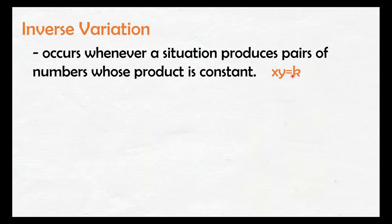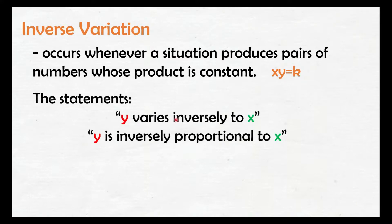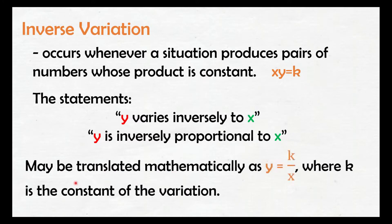In direct variation, we divided the two variables to get the constant. But here in inverse variation, we multiply the two variables, then we get the constant. The statement 'y varies inversely to x' and 'y is inversely proportional to x' may be translated mathematically as y equals k over x, where k is the constant of the variation.